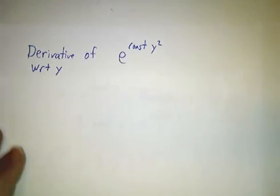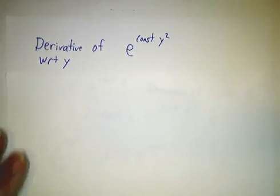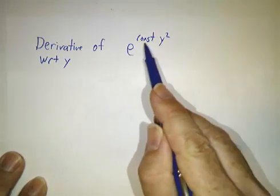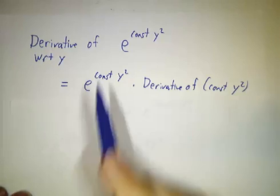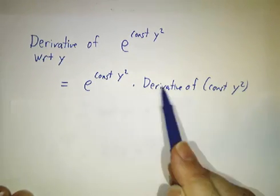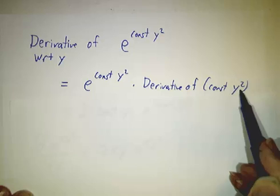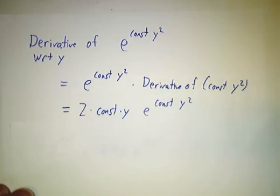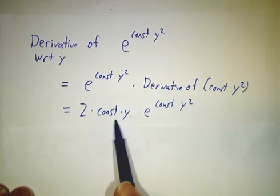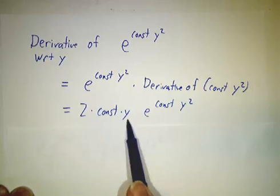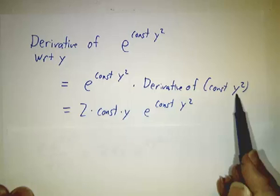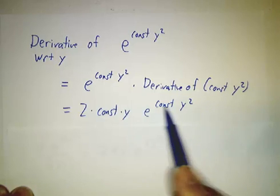Likewise, if we want to take a derivative with respect to y, we treat x as a constant. The derivative of e to the constant y squared, that's just e to the constant y squared times the derivative of constant y squared. The derivative of y squared is 2y and the constant comes along for the ride. So you get 2 constant y, that's the derivative of constant times y squared, times e to the constant y squared.